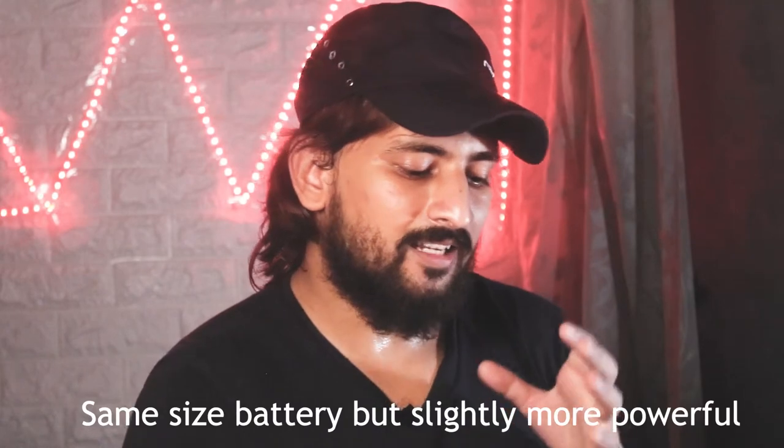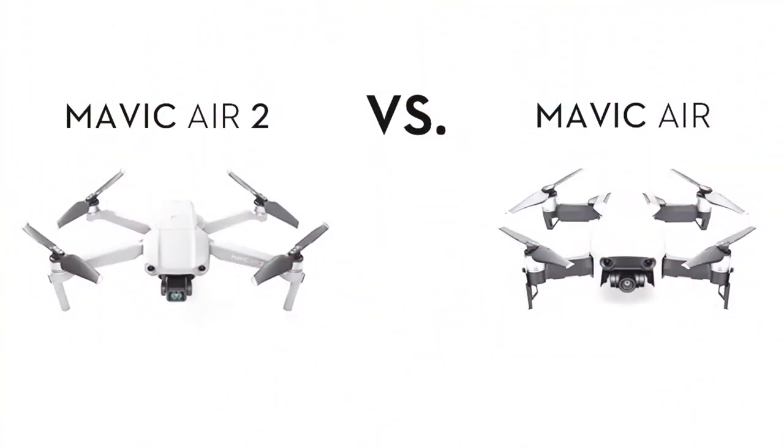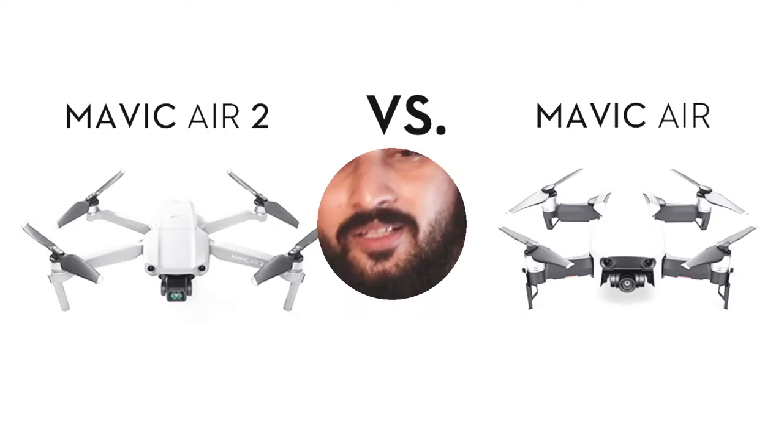The battery will be the same size but slightly more powerful — similar to what was done with the Mavic Air 2, where the battery is bigger than the original Mavic Air but the size is smaller. The same thing is happening here: the Mavic Mini 2 battery is smaller but more efficient.